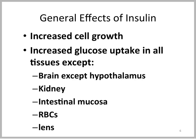The general effects of insulin include increased cell growth and increased glucose uptake in basically all cells that have GLUT4 transporters, except the brain. The brain does not need insulin for glucose uptake. However, the hypothalamus is one area within the brain which is sensitive to insulin. We also don't need insulin for glucose uptake into the kidney, into the intestinal mucosa, into red blood cells, and into the lens.